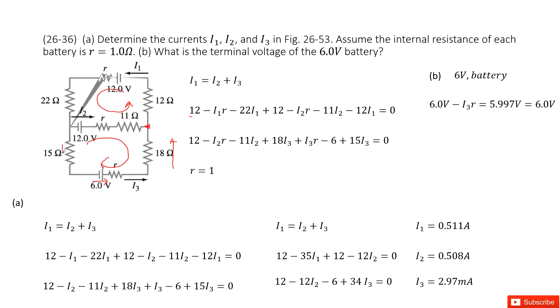And this way, the current I3 flows downward. And then the loop moves upward, opposite direction. So this is plus 15 I3. As we talked about, internal resistance for battery is 1 ohm. So we input this R inside.